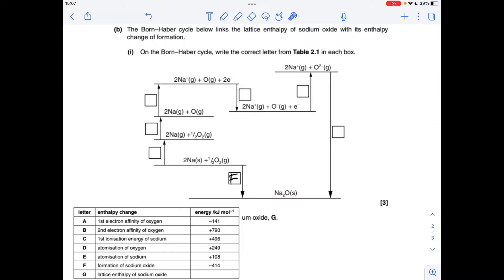For this step now we're going from elemental sodium to gaseous sodium, so that's the atomization of sodium, so that's process E. Half a mole of elemental oxygen to a single oxygen atom in the gas phase, so that is the atomization of oxygen, so it's letter D. This one here we're going from gaseous sodium to gaseous sodium 1+ ion, so that's the first ionization energy of sodium, option C.